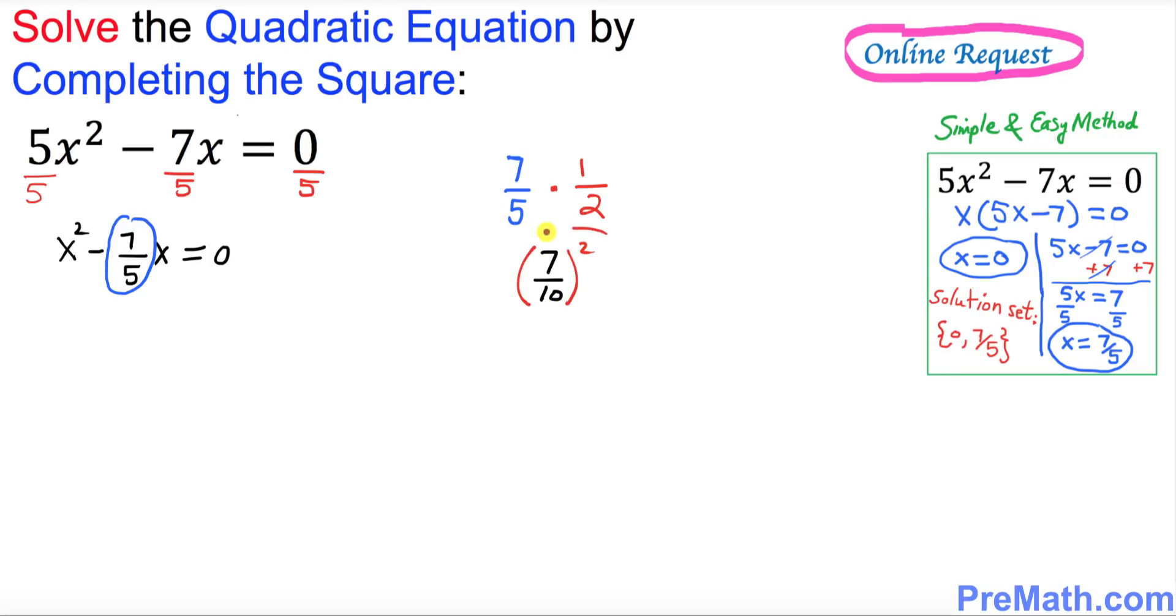Whatever this quantity is, I'm gonna add to both sides of this equation. So let's go ahead and do that step. x² minus 7/5x plus equals 0 plus. Now I'm gonna add this quantity (7/10)² and (7/10)² on this side as well.